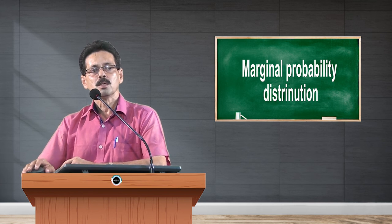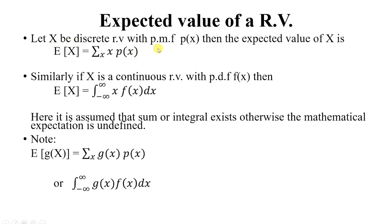Next, the expected value of a random variable. Let x be a discrete random variable with pmf p(x). Then the expected value, which is the mean value of the random variable x, is given by E(x) equal to summation of x times p(x). If x is a continuous random variable with pdf f(x), then E(x) is defined as the integral from minus infinity to plus infinity of x times f(x) dx, where this sum or integral must exist; otherwise the mathematical expectation is undefined.